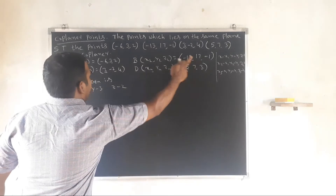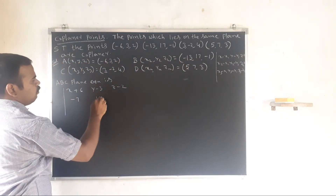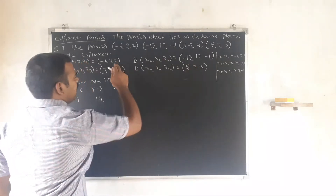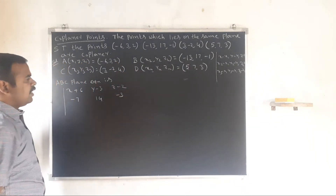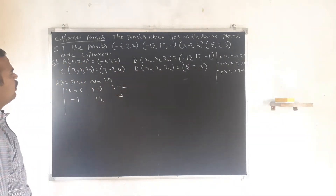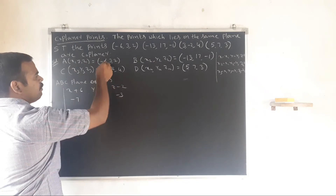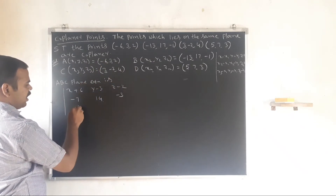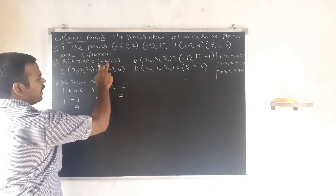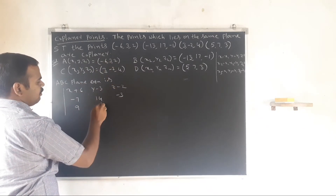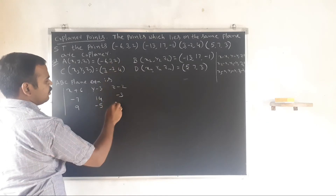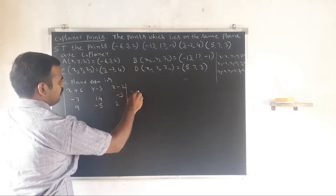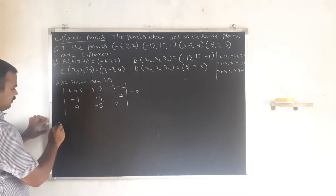Continuing: z2 minus z1 equals -1 minus 2 equals -3. Third row: x3 minus x1 equals 3 minus (-6) equals 9. y3 minus y1 equals -2 minus 3 equals -5. z3 minus z1 equals 4 minus 2 equals 2. So the determinant is equal to 0.